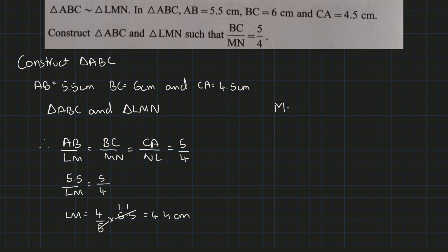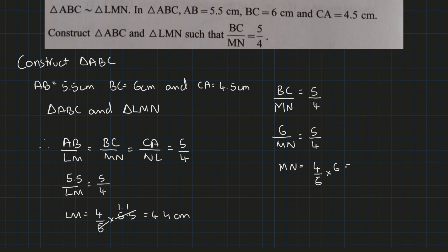Similarly, with the other ratios, we write BC upon MN which is equal to 5 upon 4, and substitute the value of BC as 6. We cross multiply: 4 upon 5 into 6. We multiply and divide and get the value as 4.8 centimeters.